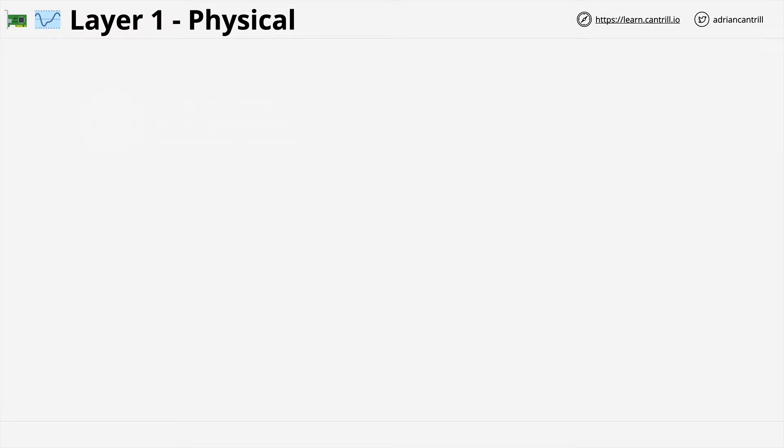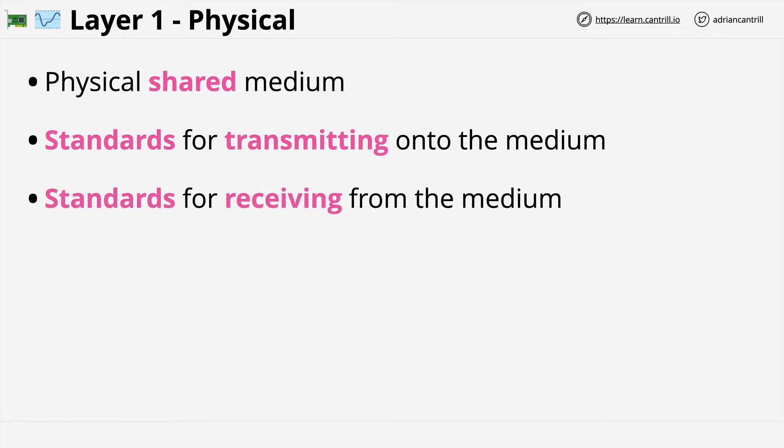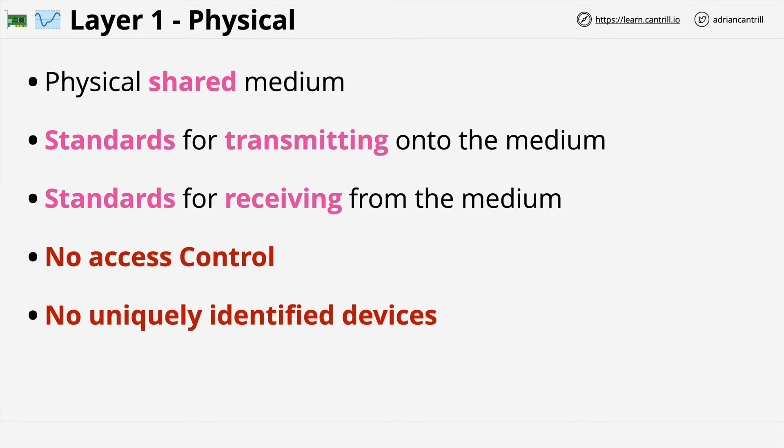As a summary of the position that we're in right now, assuming that we have only Layer 1 networking, we know that Layer 1 focuses on the physical shared medium. And it focuses on the standards for transmitting onto the medium and receiving from the shared medium. So all devices which are part of the same Layer 1 network need to be using the same Layer 1 medium and device standards. Generally, this means a certain type of network card and a certain type of cable, or it means Wi-Fi cards using a certain type of antennas and frequency ranges. What Layer 1 doesn't provide is any form of access control of the shared medium, and it doesn't give us uniquely identifiable devices. And this means we have no method for device-to-device communication. Everything is broadcast using transmission onto the shared physical medium.